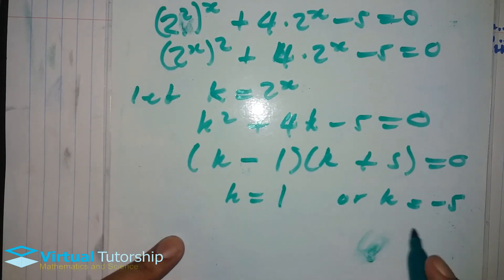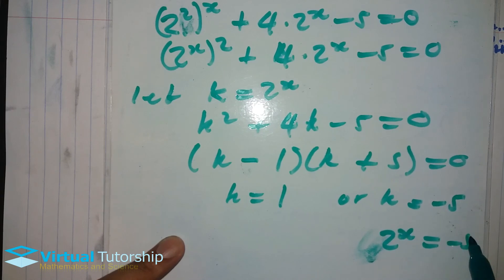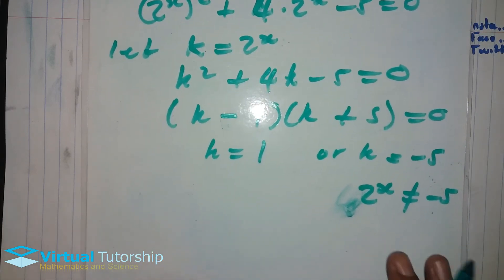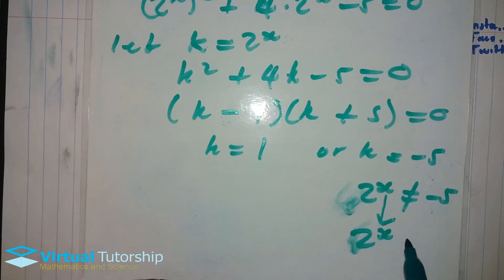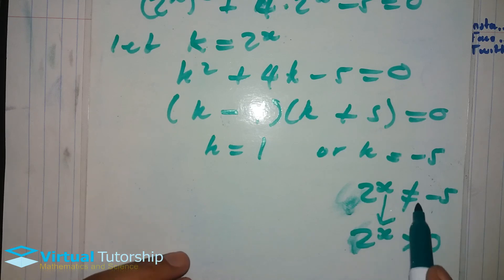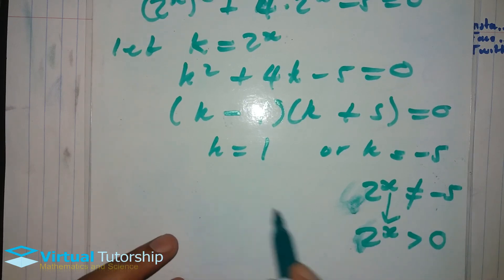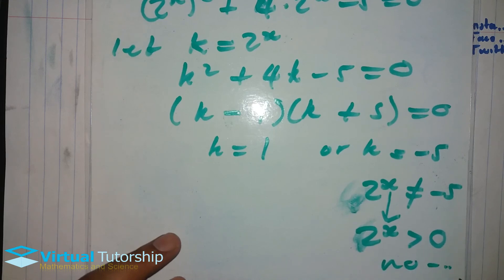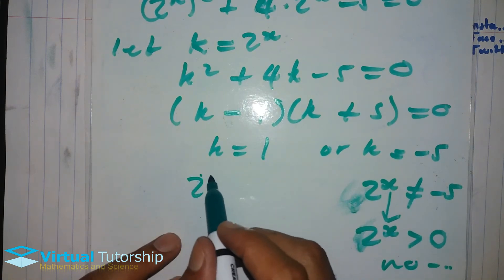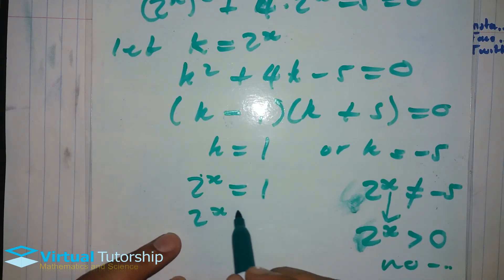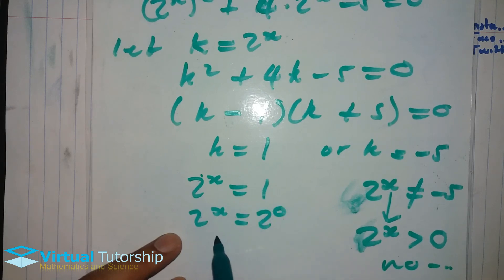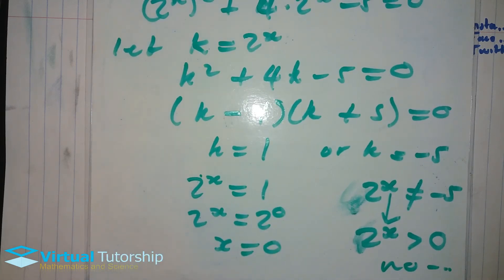Let's substitute back: 2 exponent x equals negative 5 — this will never happen for any x value, because substituting any value into an exponential always gives a positive number, not a negative number. So this is no solution. My other k: 2 exponent x equals 1. Just like in the previous example, applying the exponential corollary.